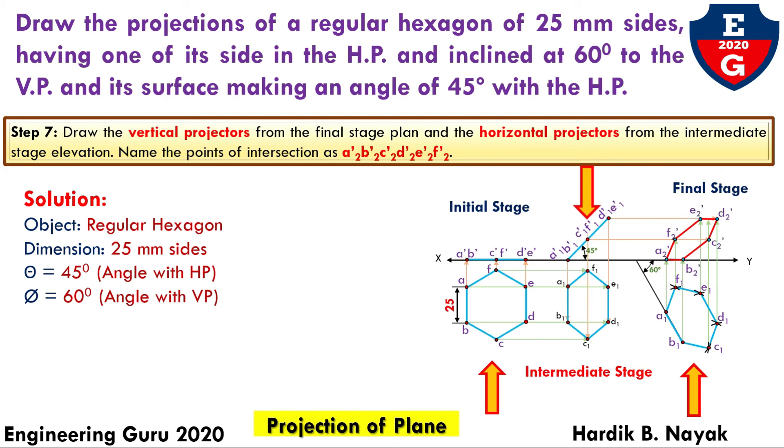This is the final shape of the projection of a regular hexagon, inclined at 60 degrees to the VP, and the surface making an angle 45 degrees with the HP.